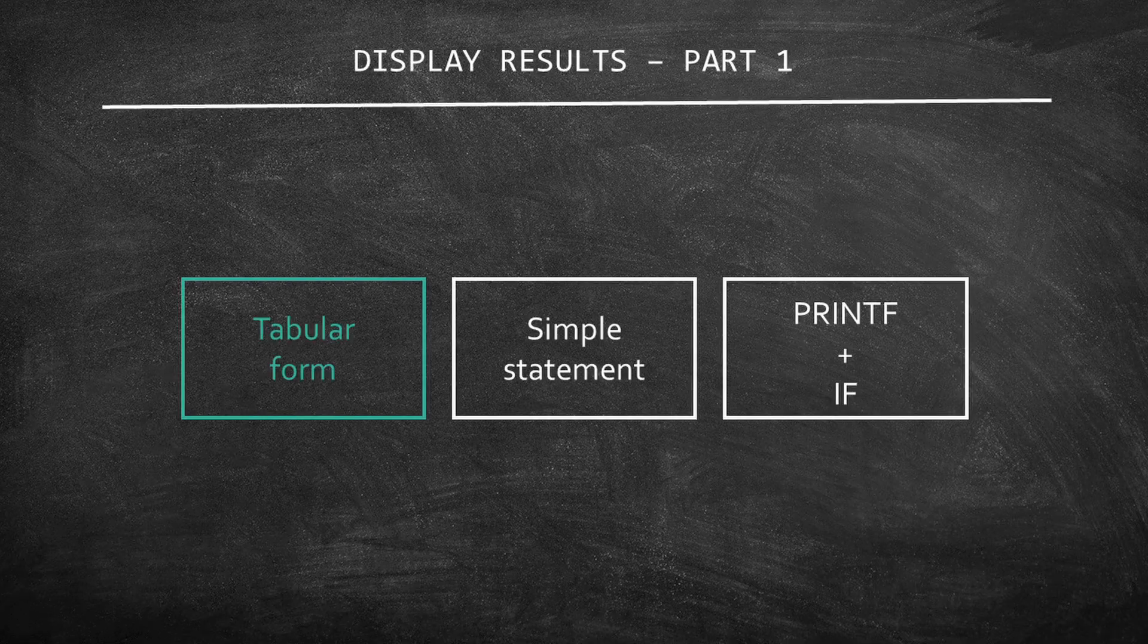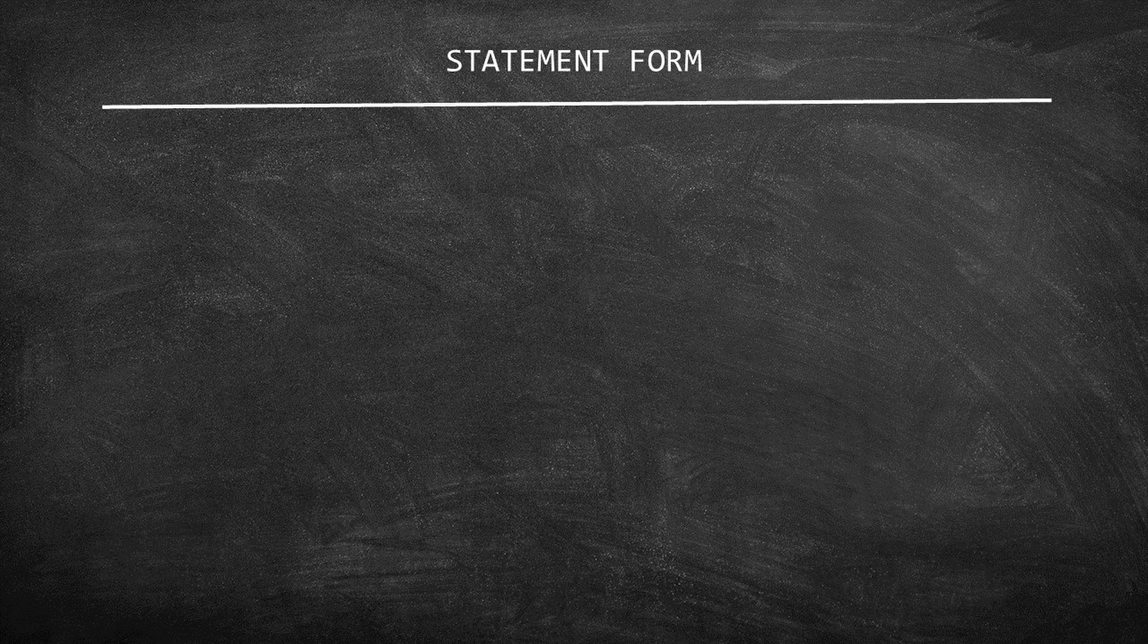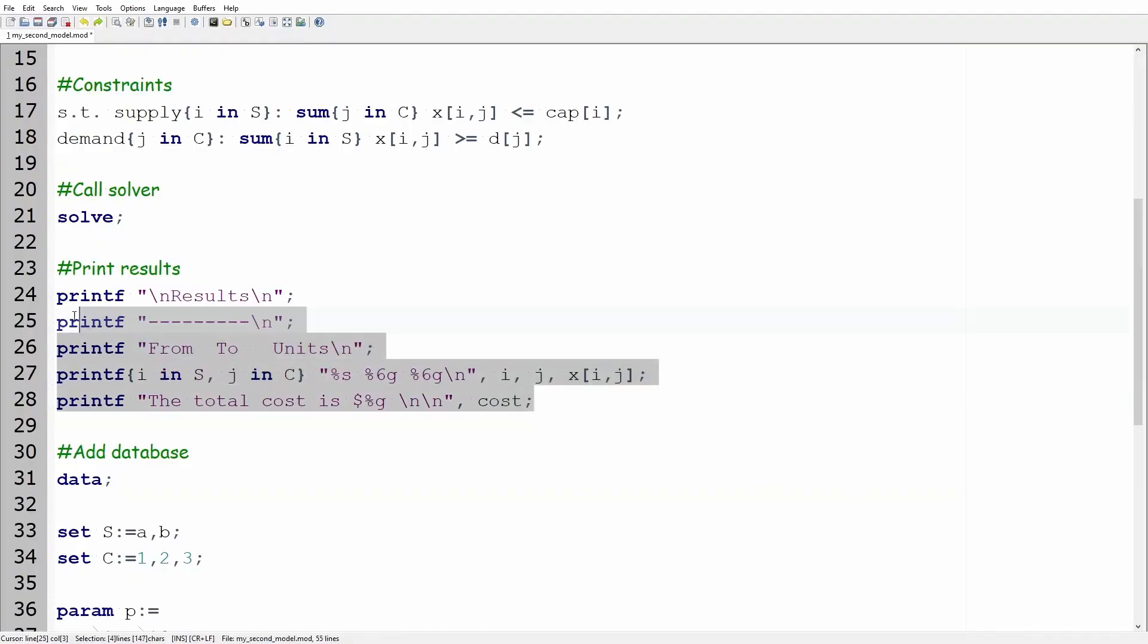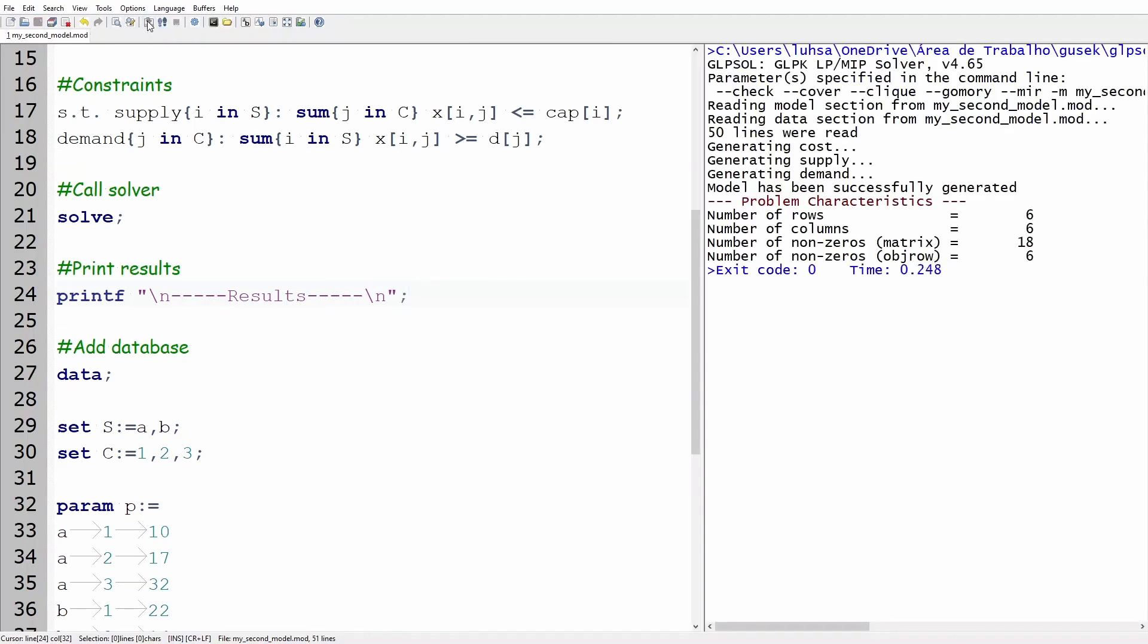Now that you have printed the result in a tabular format let's rewrite it differently. In this new format we want to print a sentence that says how much each supplier will deliver to each customer. Return to our model. Start by erasing the previous printf statements. Instead of writing results and adding a line type printf quotation marks backslash n five dashes result five dashes backslash n quotation marks semicolon. Try to run the code and see if you notice anything different.